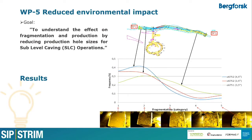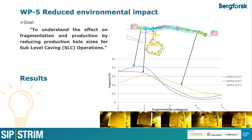Work package 5 is about reduced environmental impact. To reduce the environmental impact means to reduce the ground vibrations, and for that purpose the blast hole diameter was reduced in one of the ore bodies at Manbariyat Iron Ore Mine, but it has an effect on the fragmentation as well. To see that effect, cameras were installed in one of the ore bodies to record the whole loading operation.